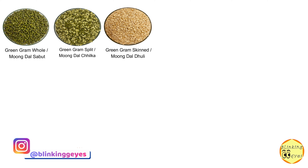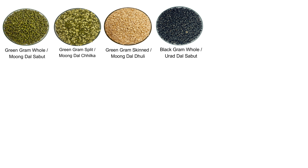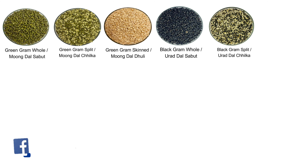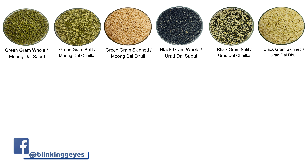Green gram whole, or moong dal sabut. Green gram split, or moong dal chilka. Green gram skinned, or moong dal dhuli. Black gram whole, or urad dal sabut. Black gram split, or urad dal chilka. Black gram skinned, or urad dal dhuli.